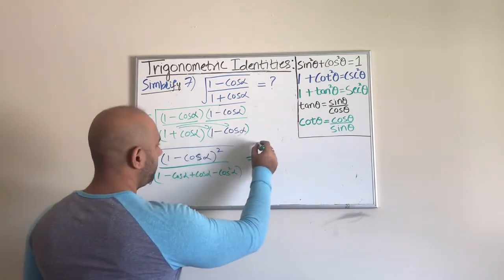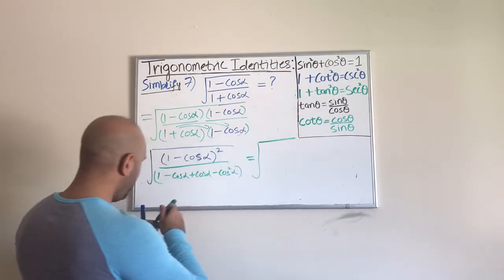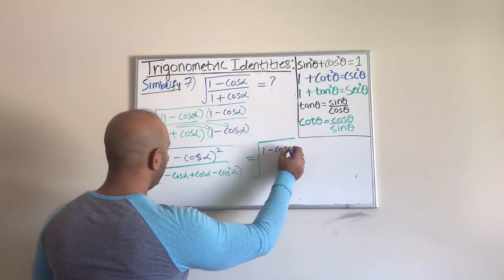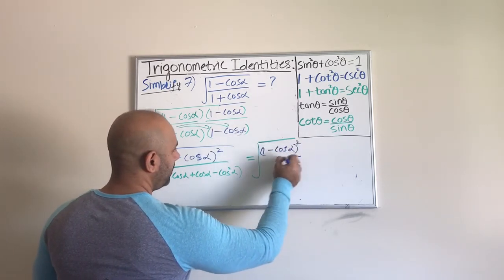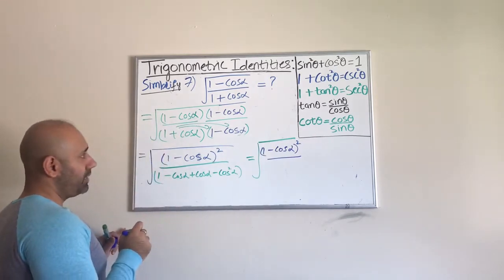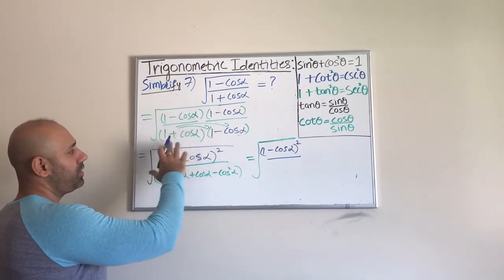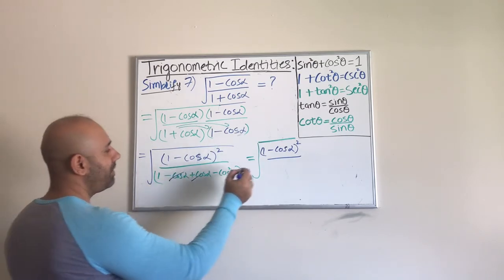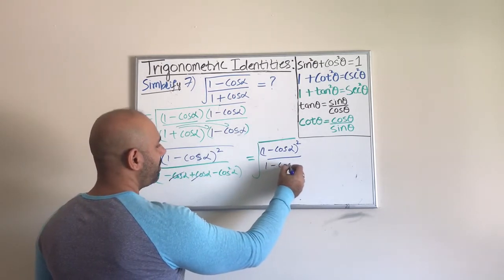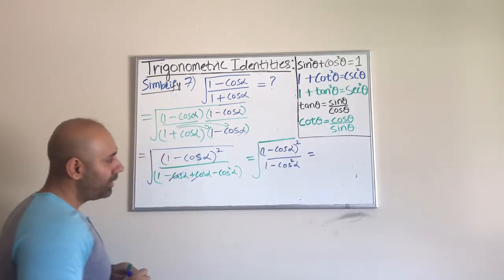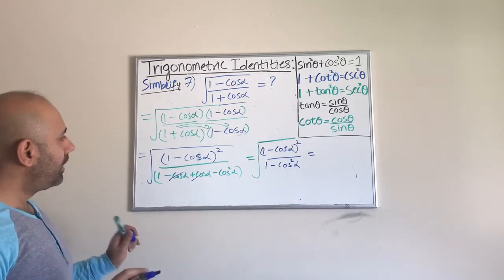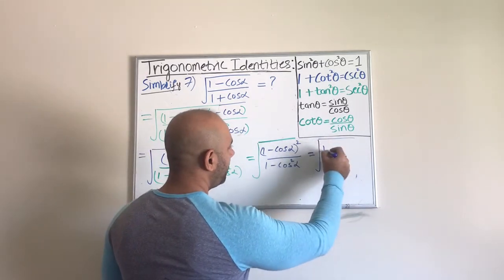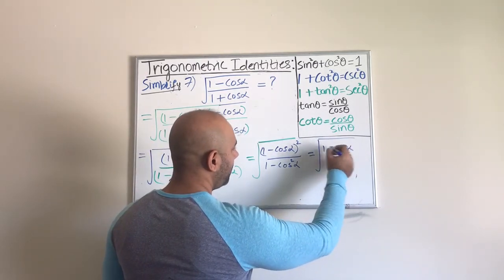Okay, simplifying further, I have square root of, I'm still going to write this as 1 minus cosine alpha whole square, divided by, let us see what happens in the denominator. Once we distribute these two, we multiply them, well now combining like terms, these two cross out. I'm left with only 1 minus cosine squared alpha.